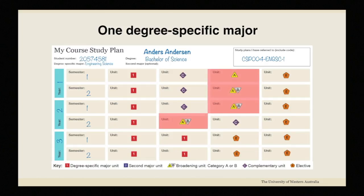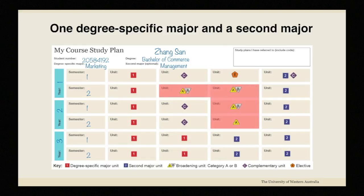Here's a tip about timing. Try to take a couple of broadening units in your first year to see how it goes. Then do the rest by the end of your second year because your study plan might be less flexible in your third year, especially if you want to do a second major.